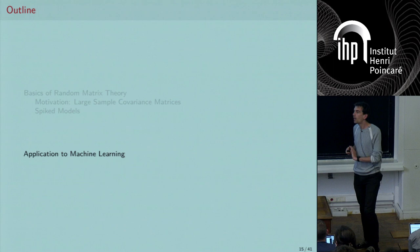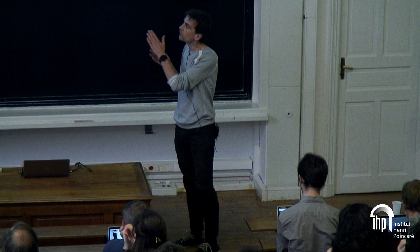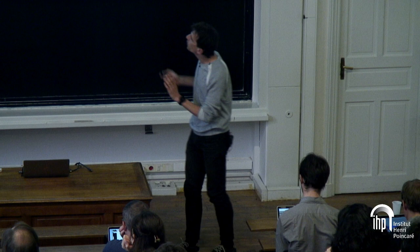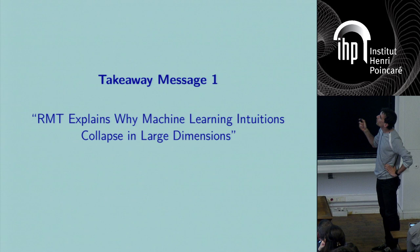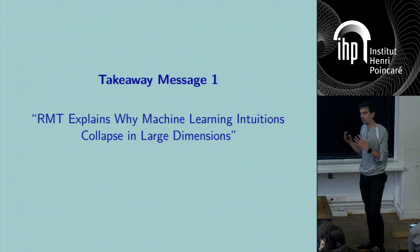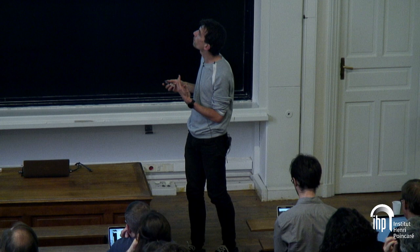Let me show what happens when we apply this to machine learning and why the intuition breaks down for large-dimensional data. The first message: random matrix theory (RMT) can explain collapsing behaviors of standard machine learning algorithms — starting with SVMs — when your data are large-dimensional.